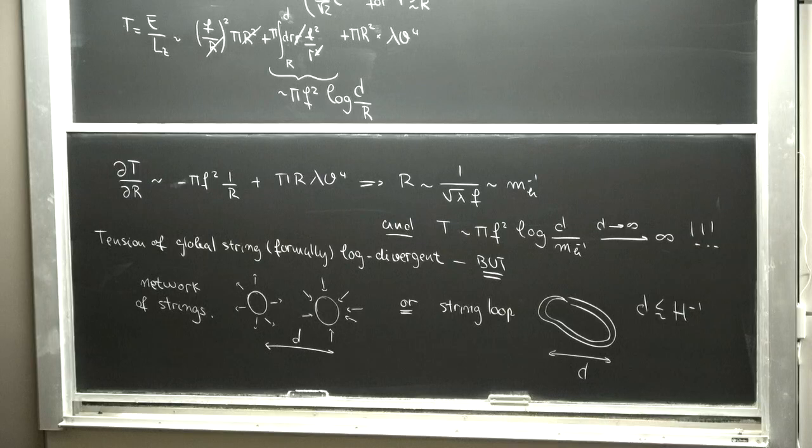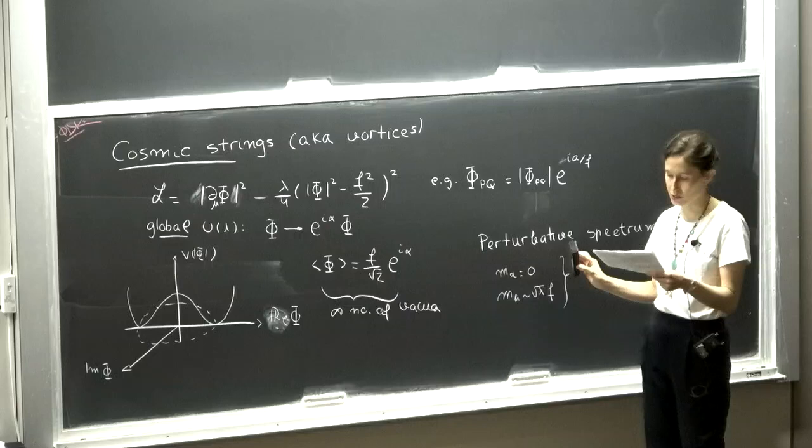Let me say a little bit more about two types of strings that are common in many extensions of the standard model. One is what we typically call a PQ string — the types of strings that arise in theories of the QCD axion. We already discussed that the QCD axion solution requires introducing this U(1) PQ symmetry that is spontaneously broken, so that immediately tells us there are going to be string-like defects.